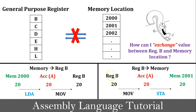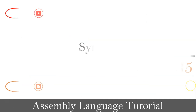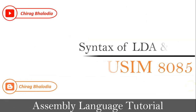So with the help of these two examples we can understand that LDA and STA instructions are used with the accumulator and memory location.